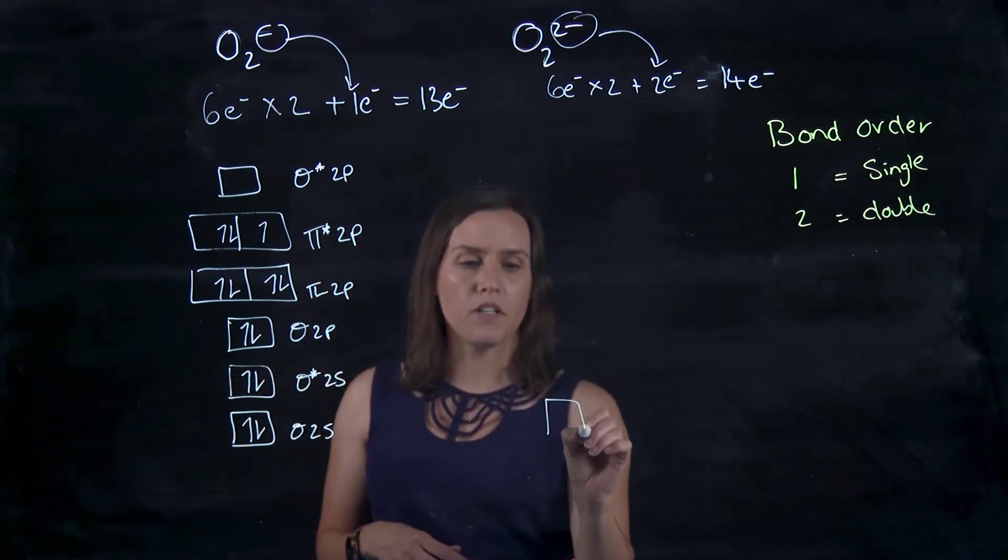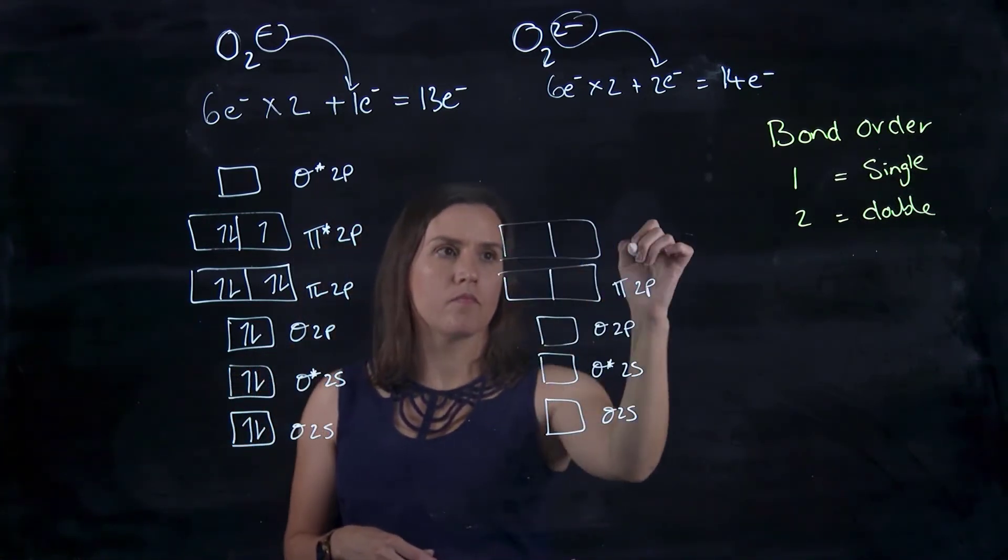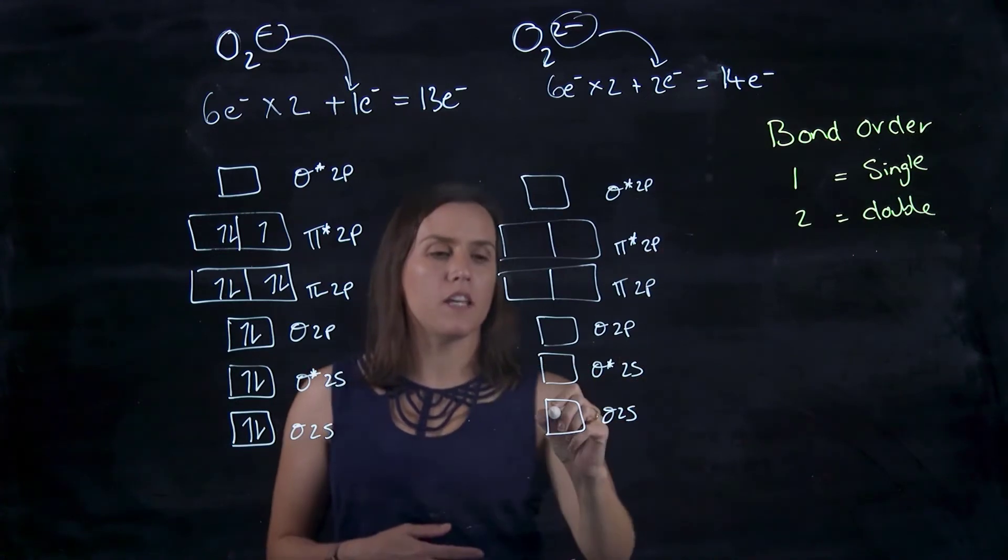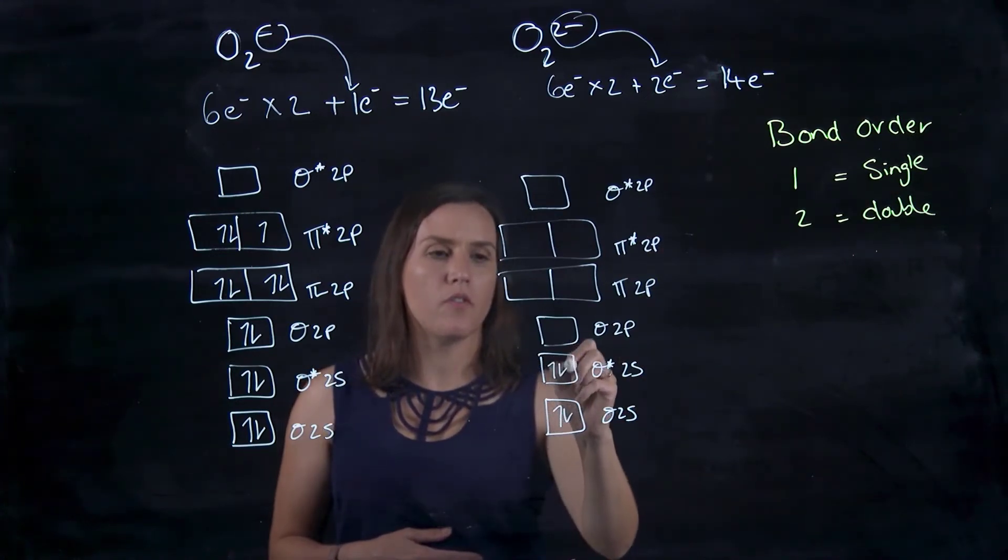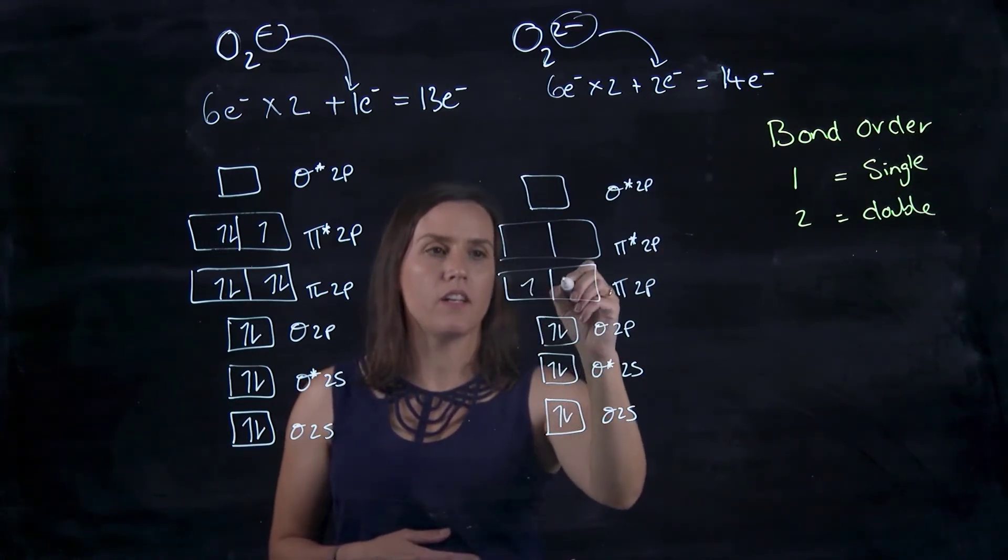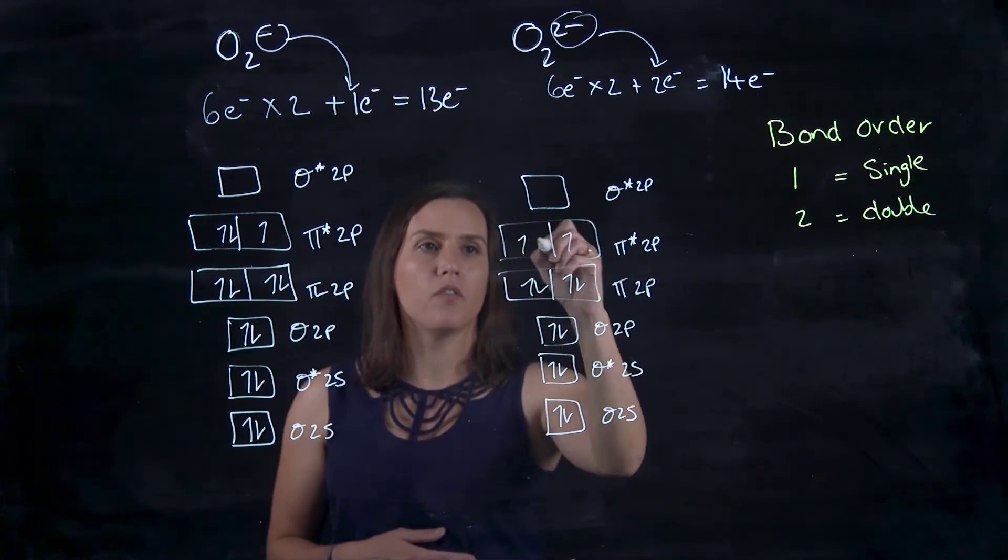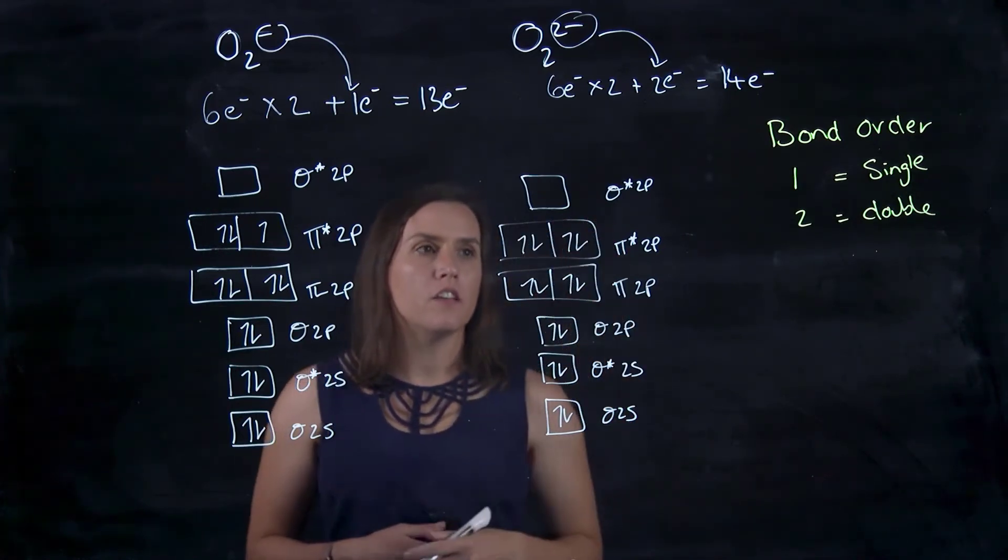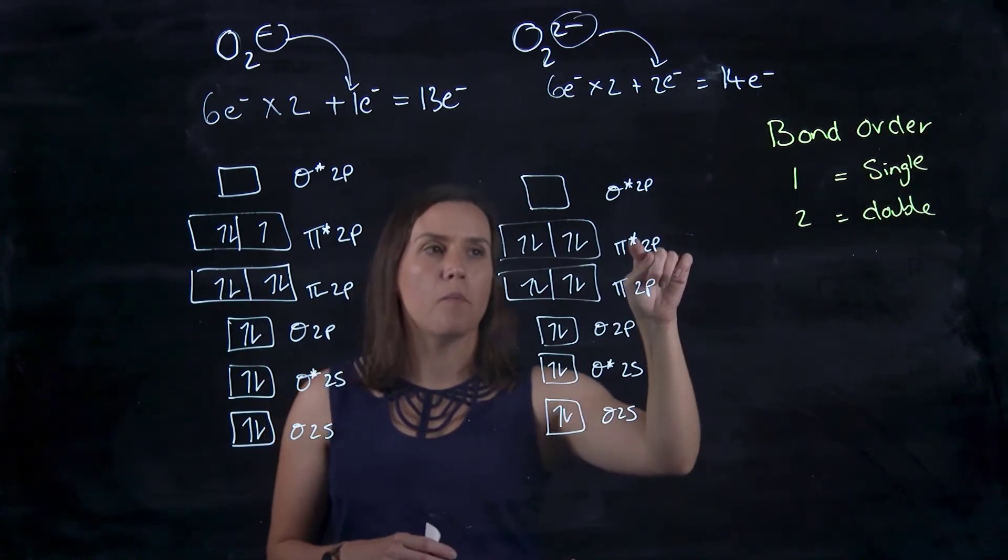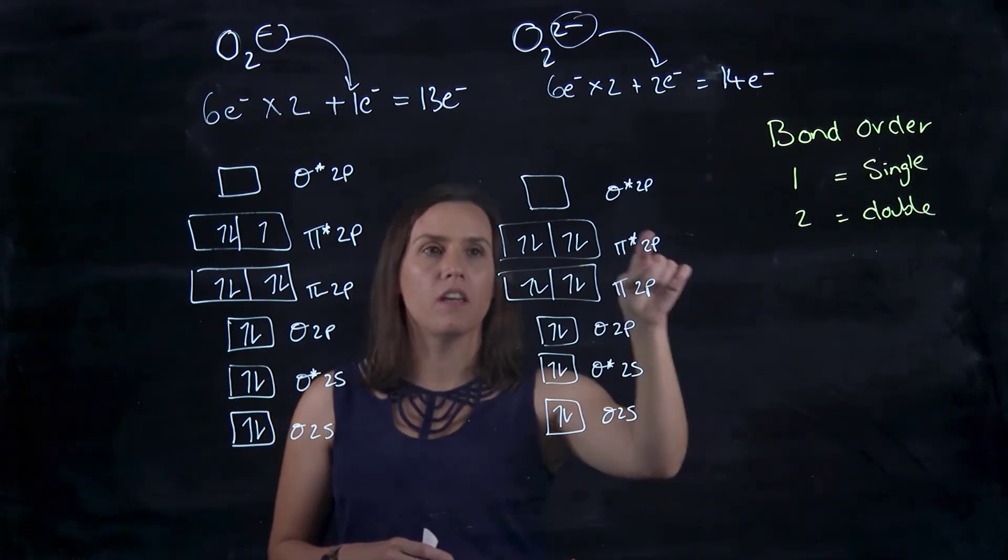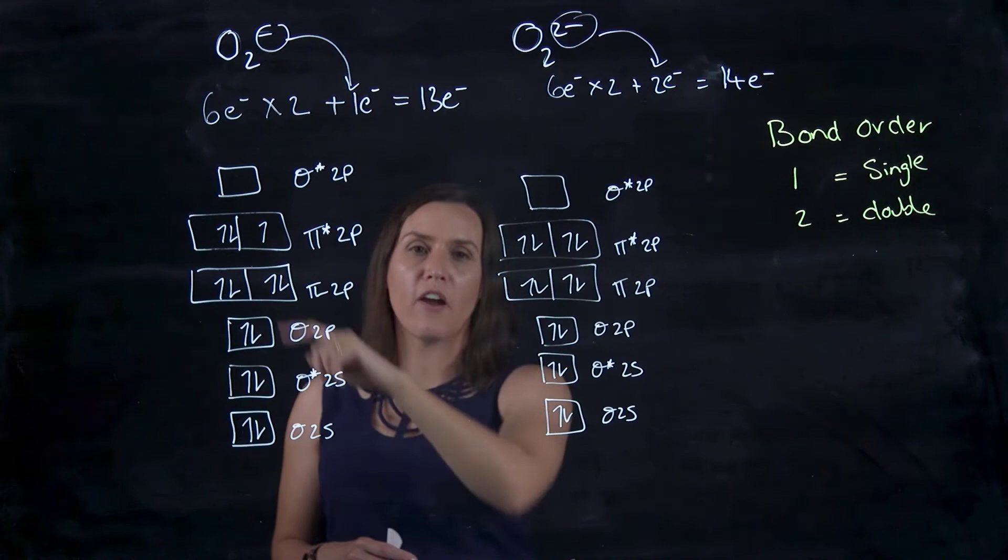If I was to fill up the other one, now I've got 14: 1, 2, 3, 4, 5, 6, 7, 8, 9, 10, 11, 12, 13, 14. So now my anti-bonding pi two P is completely full, whereas before I only had three in there.